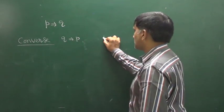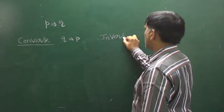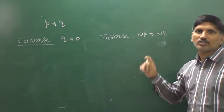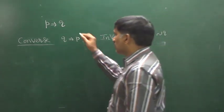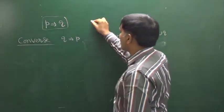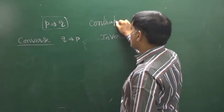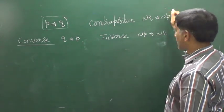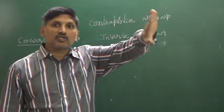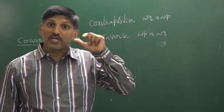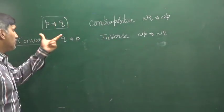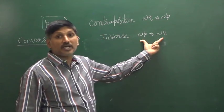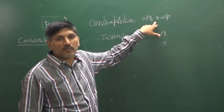For the statement P implies Q, what is the inverse? The inverse is negation P implies negation Q. And the contrapositive, which you already know, is negation Q implies negation P. So when a question gives P implies Q, the converse is Q implies P, the inverse is negation P implies negation Q, and the contrapositive is negation Q implies negation P.